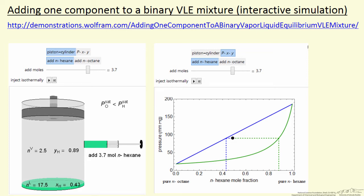If you select the PXY button, then you display the starting condition and the final condition. So you hit play, and we start at this point—a vapor-liquid mixture, but very close to the liquid line. It's 17.5 moles of liquid and only 2.5 moles of vapor.